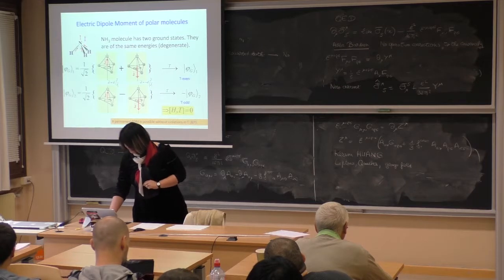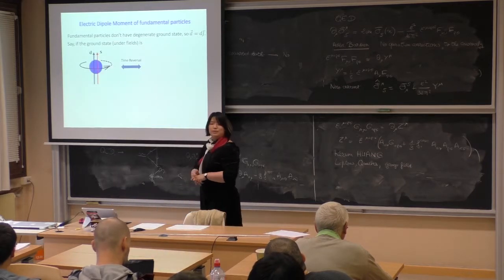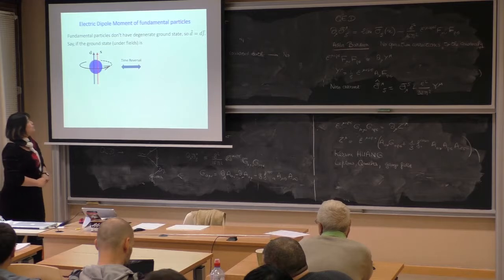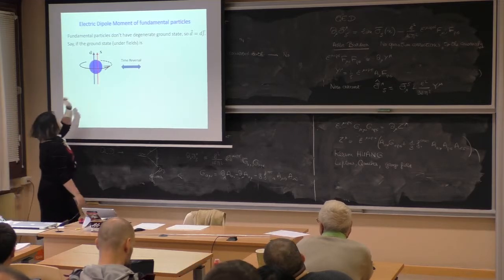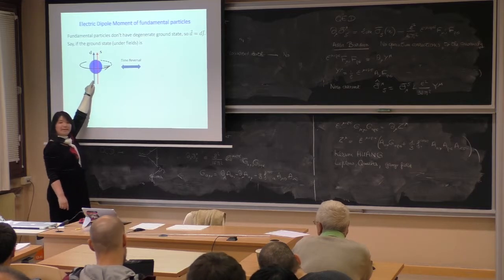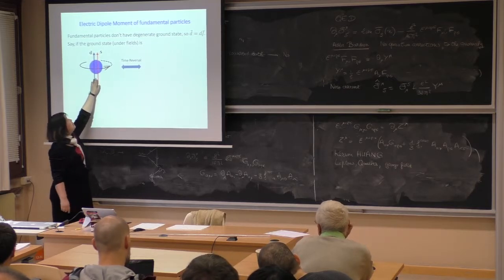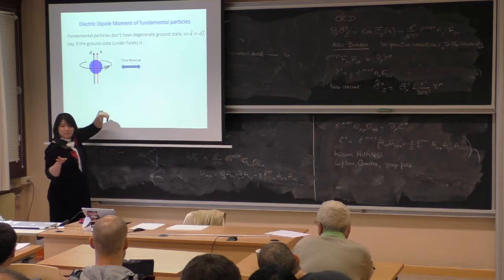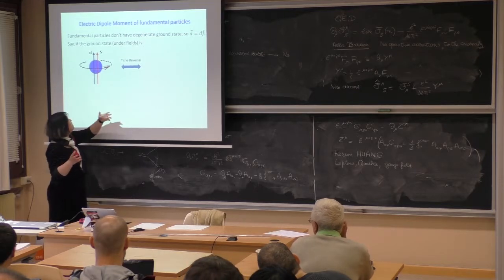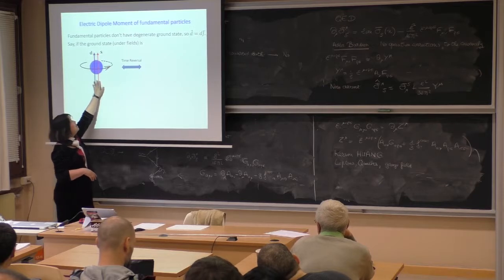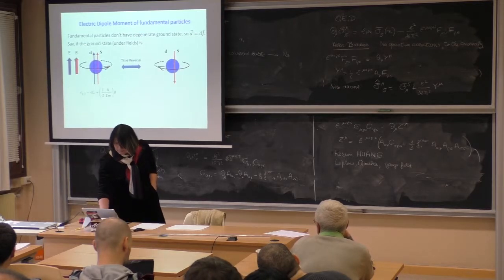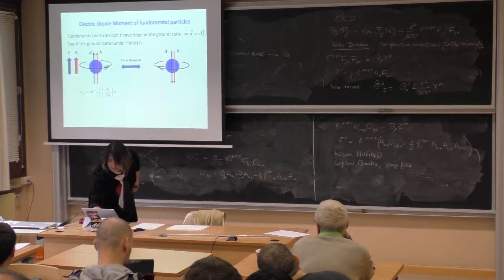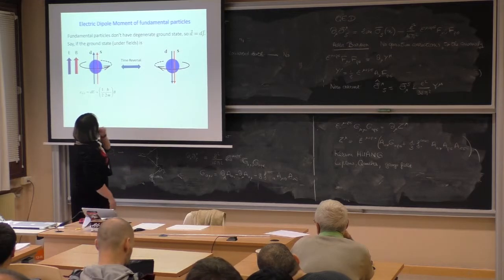However, for a fundamental particle, the situation is not the same. Fundamental particles don't have degenerate ground states. If I want to put spin together with EDM, either this or anti-aligned is the only option for the ground state — you cannot have both. Assume this is the ground state. Under time reversal, the EDM will point in the same direction.